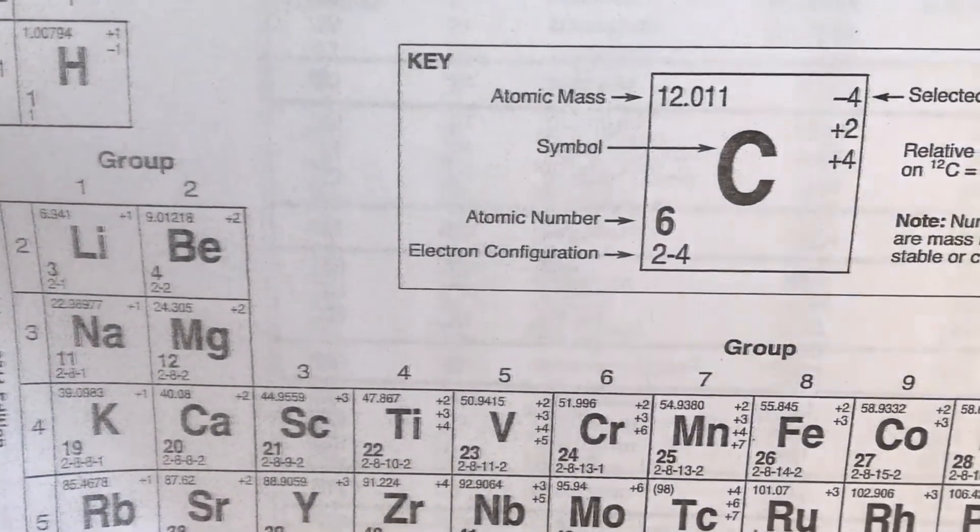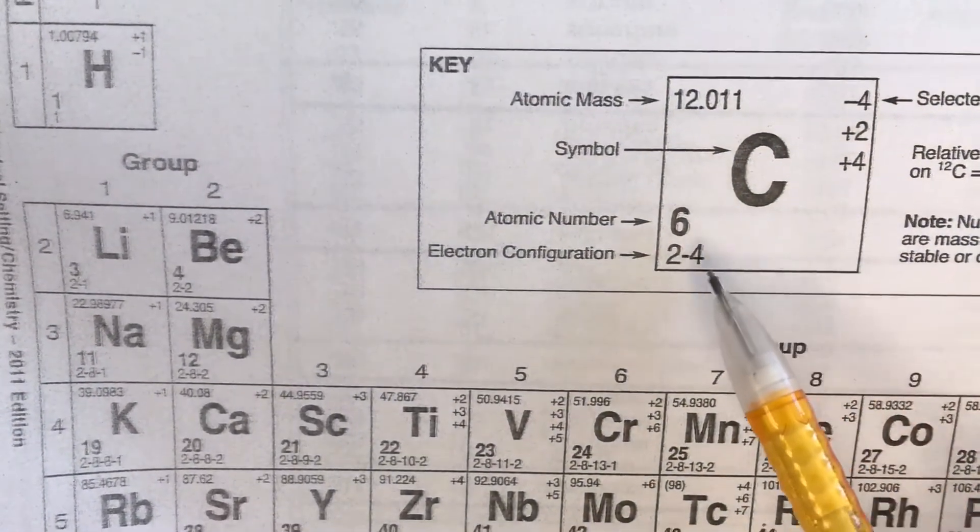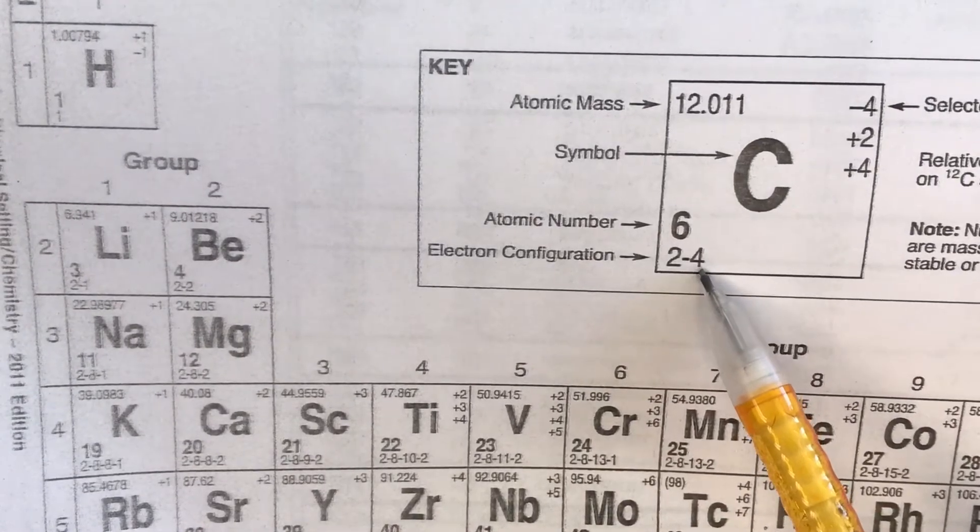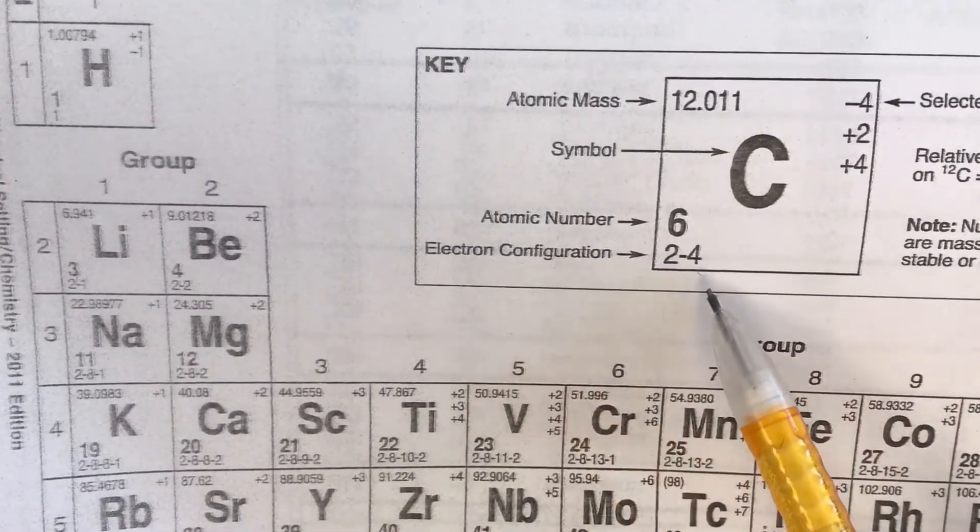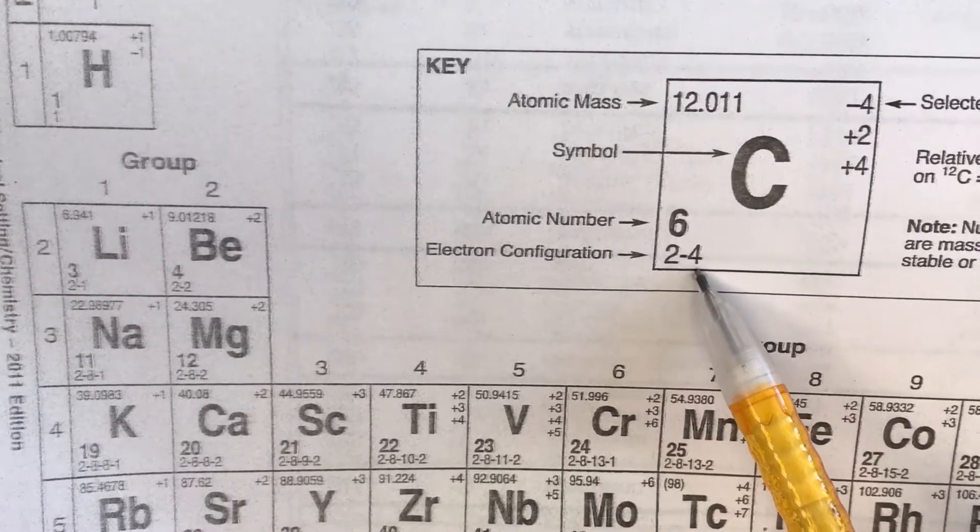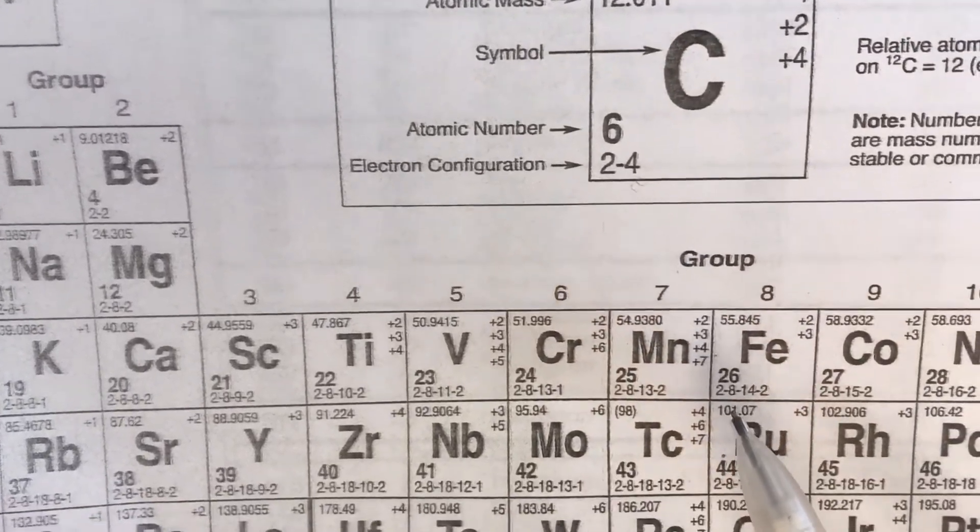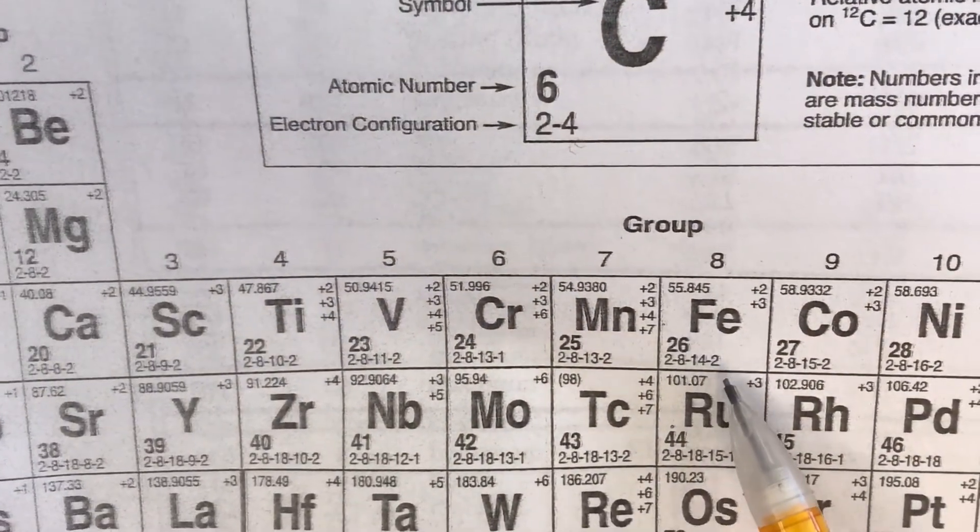When we look at, for example, the New York State chemistry reference tables in the periodic table, the valence electron is going to be the last number shown at the bottom of the electron configuration.